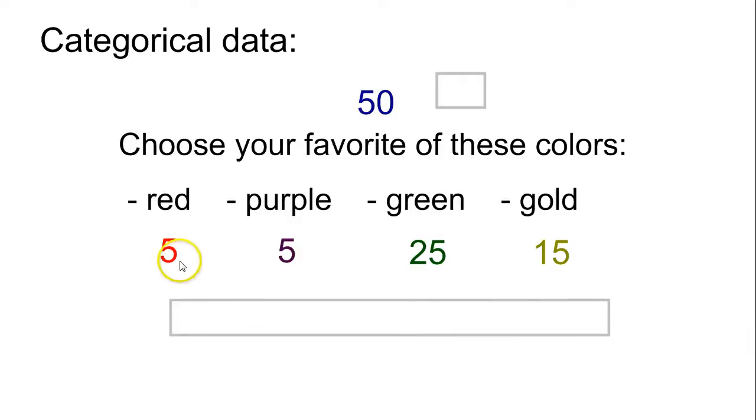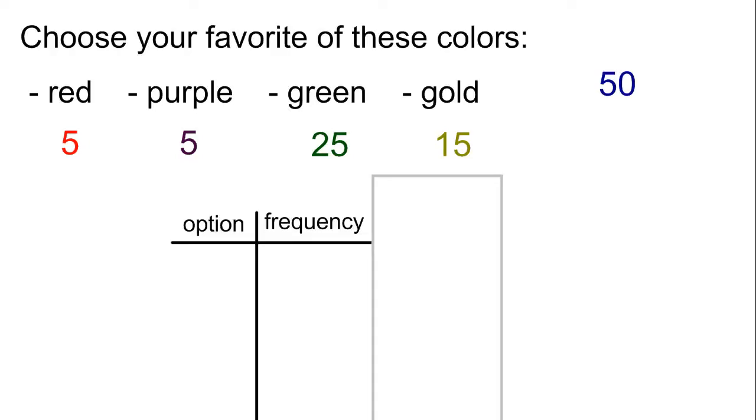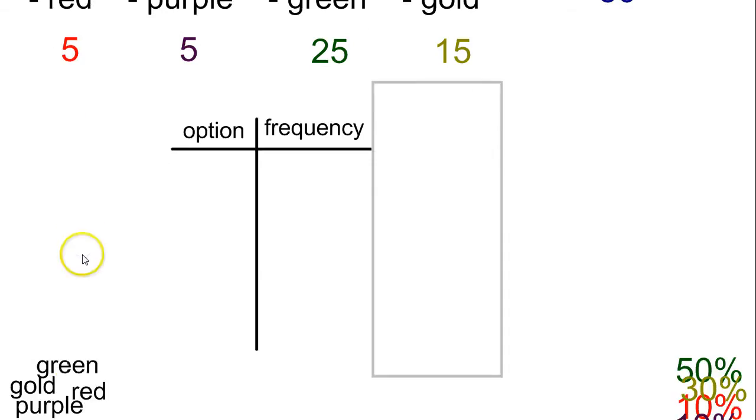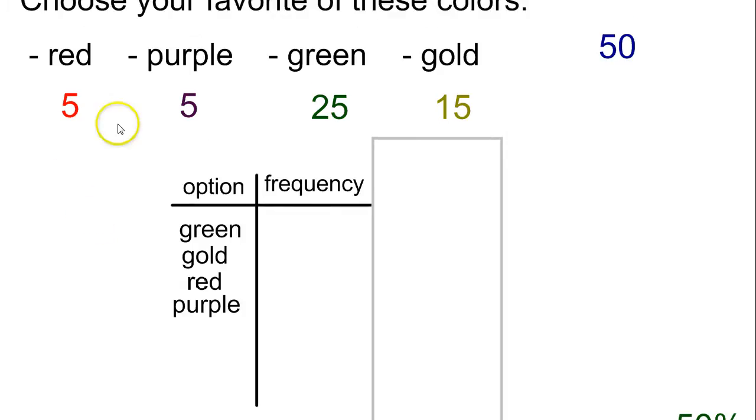So those are the counts. If you go through the big spreadsheet and count them up, this is what you would get. To create a frequency chart, all you do is you take your options - green, gold, red, and purple - list them in the chart on the left side here, and then on the right side you just put the frequency, or how many times that number came up. So green came up 25 times, gold came up 15 times, red as an option came up five times, and purple as an option came up five times. This would be a frequency chart.